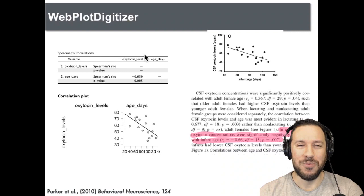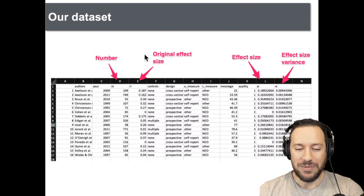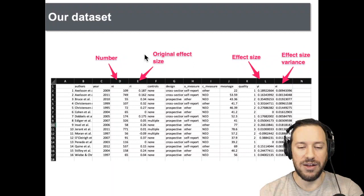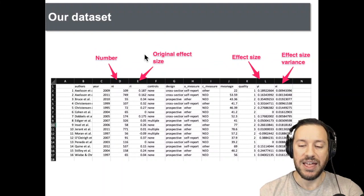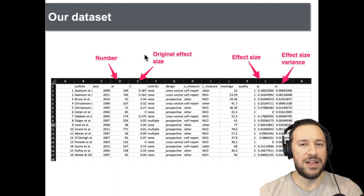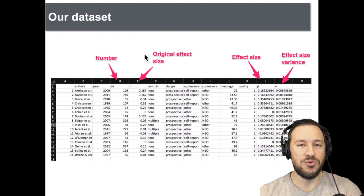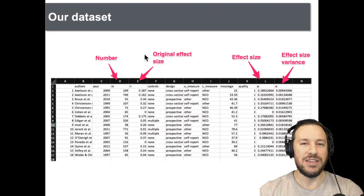When setting up your dataset for analysis, for a correlational meta-analysis you typically have one column for the number of participants, a second column for the Pearson's R correlation, and then the calculated Fisher's Z and its variance. Normally I do my meta-analysis in R, but a lot of people don't use R — and that's fine, you can actually do a transparent and reproducible meta-analysis in different software. Within R you can automatically calculate the effect size and its variance, but you can also do the same in the website I showed previously.